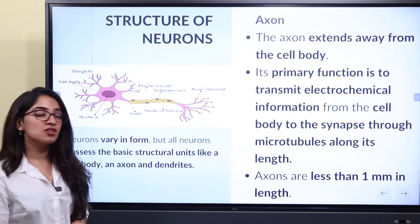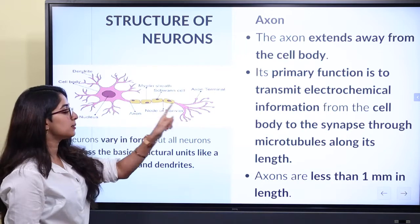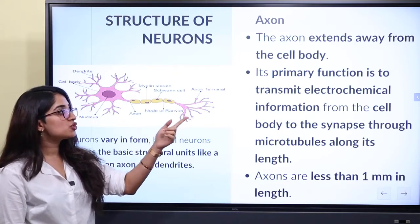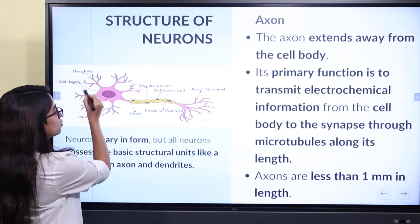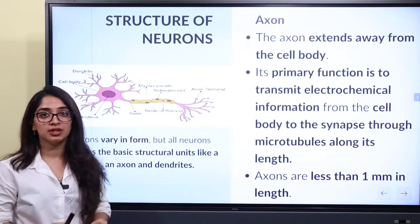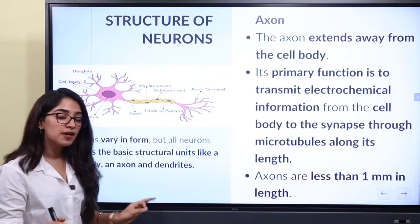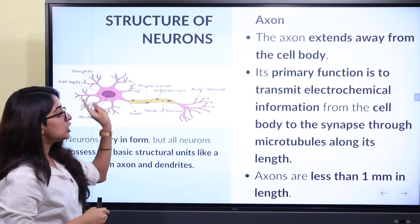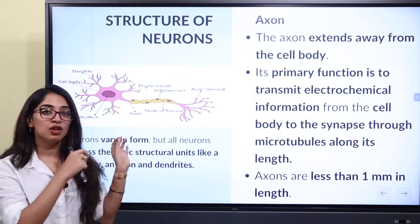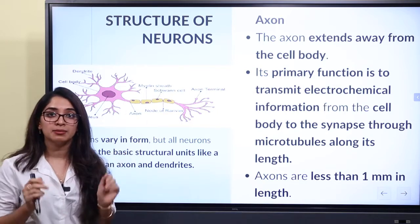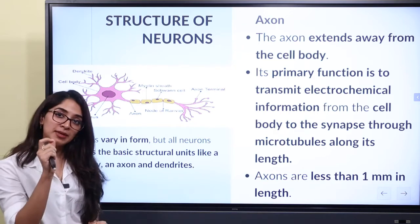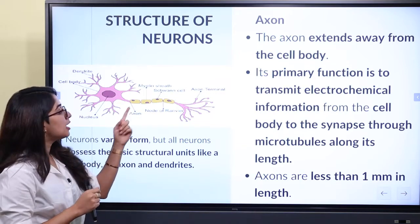Now let's look at the axon. The axon extends away from the cell body. Its primary function is to transmit electrochemical information from the cell body to the synapse through microtubules — transmitting information along its length. Axons can be less than 1 mm in length. The yellow portion in the figure is the myelin sheath, which is the covering of the axon.